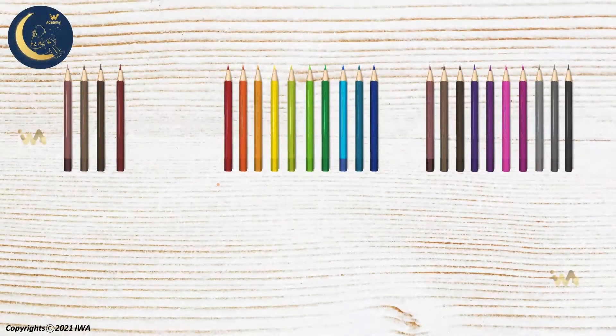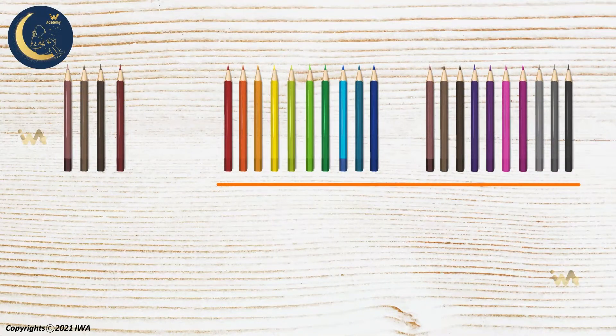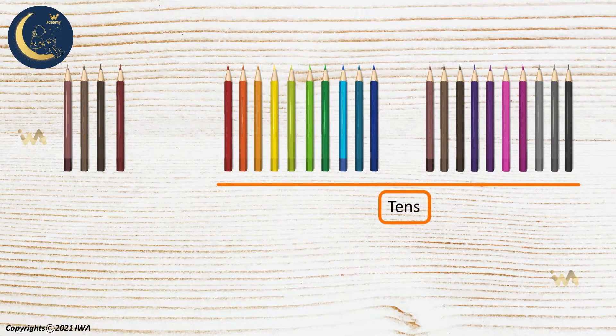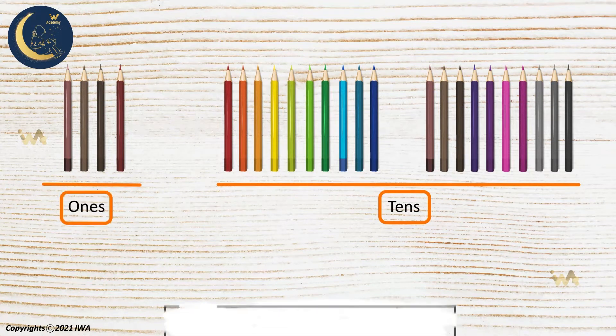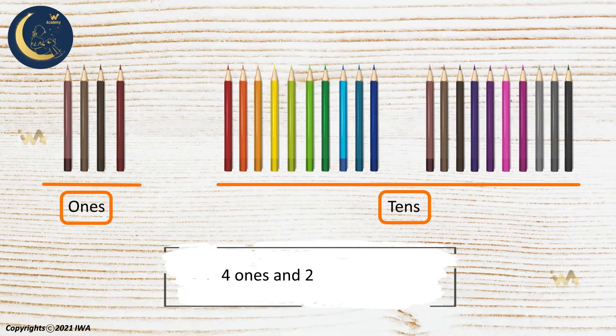The group of pencils that is made up of 10 pencils is referred to as tens. As for the rest, they're referred to as ones. So we have 4 ones and 2 tens.